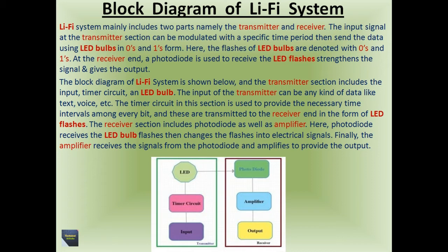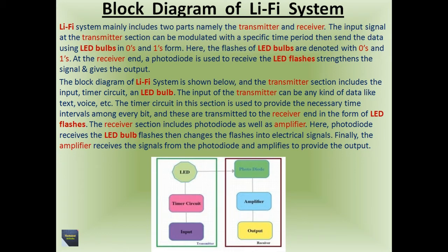At the receiver end, a photodiode is used to receive the LED flashes, strengthen the signal, and give the output. The transmitter section includes: input, timer circuit, and LED bulb. The input can be any kind of data like text, voice, etc. The timer circuit provides the necessary time intervals among every bit, and these are transmitted to the receiver end in the form of LED flashes. The receiver section includes a photodiode and an amplifier. The photodiode receives the LED bulb flashes and changes them into electrical signals. Finally, the amplifier receives the signals from the photodiode and amplifies them to provide the output.